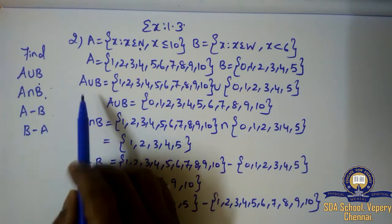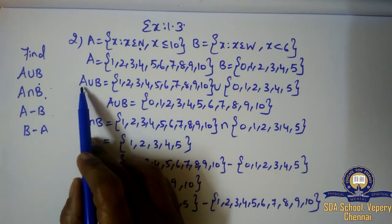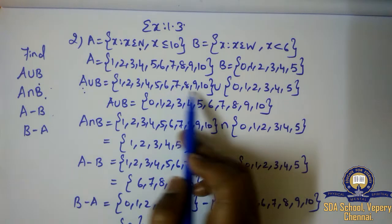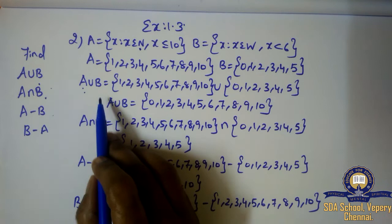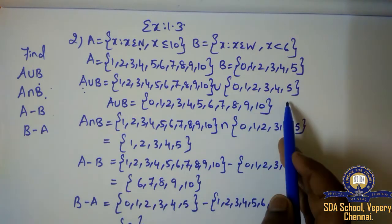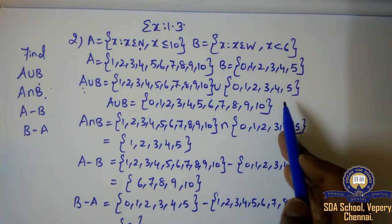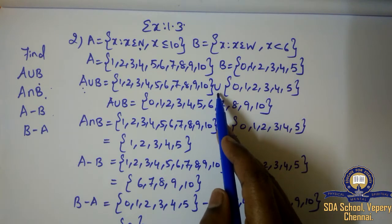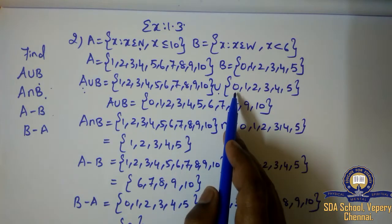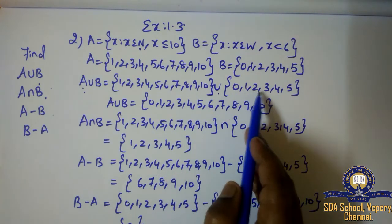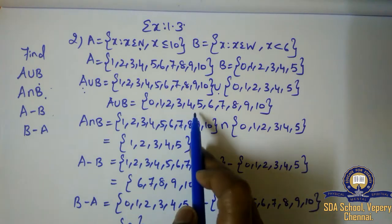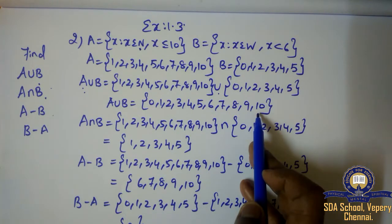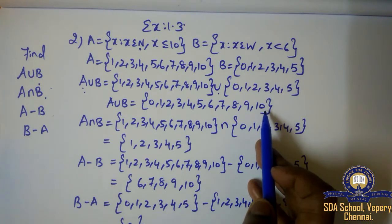A union B: instead of A I have written 1 to 10, union symbol, then instead of B I have written 0 to 5. Union means combining all values. Starting from 0: 0, 1, 2, 3, 4, 5 — then the repeated values 1–5 should not be written again — so continuing: 6, 7, 8, 9, 10. This is the A union B value: {0, 1, 2, 3, 4, 5, 6, 7, 8, 9, 10}.